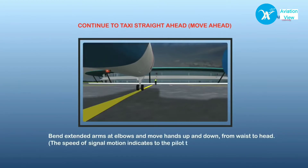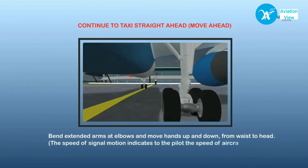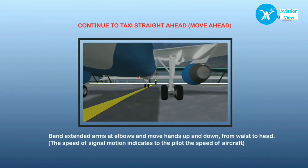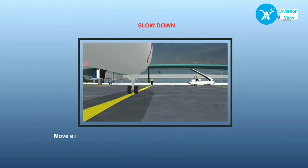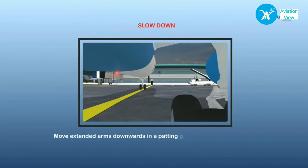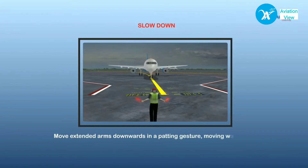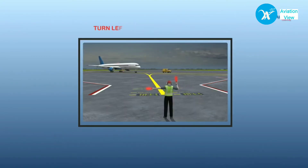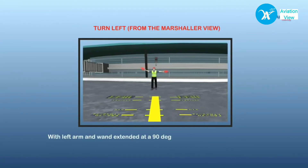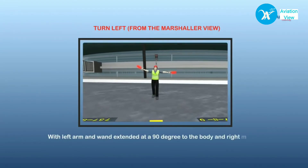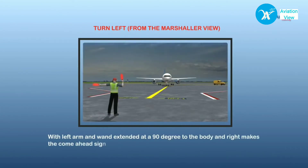The speed at which the marshaller's arms move during signaling indicates the speed at which the aircraft should proceed. To get the aircraft to slow down, move extended arms downwards in a patting gesture. When the marshaller wants the aircraft to move to his left, he extends the left arm with the wand at 90 degrees to the body and gives the come-ahead signal with his right hand.